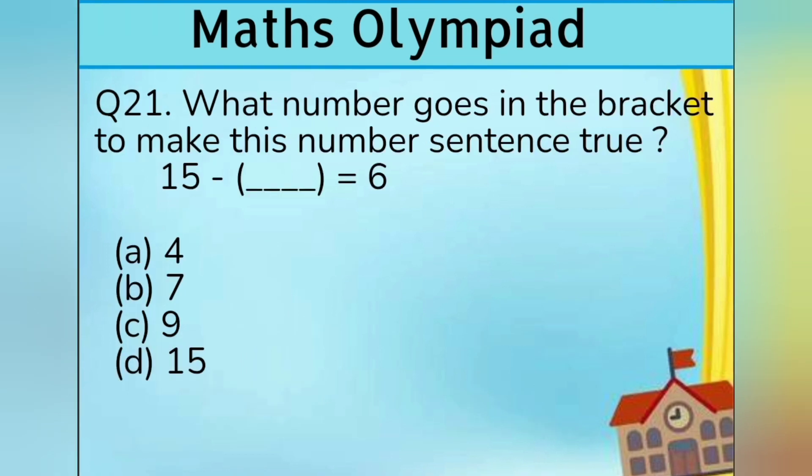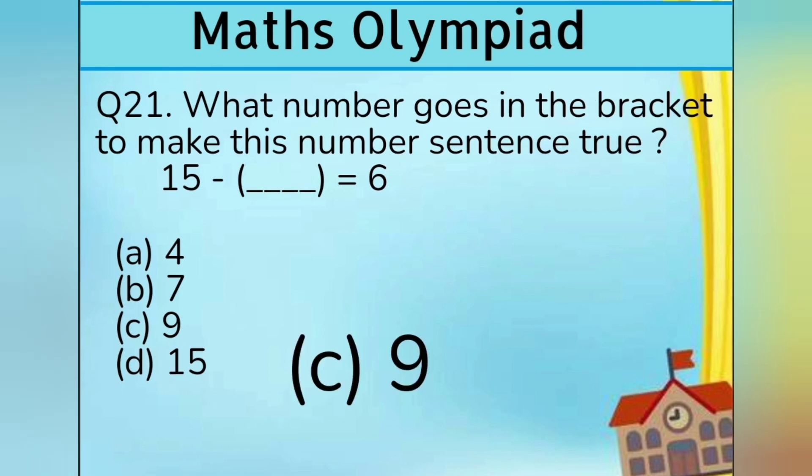Question number 21. What number goes in the bracket to make this number sentence true? 15 minus dash equals 6. Option A 4, Option B 7, Option C 9, and Option D 15. Answer is Option C 9.